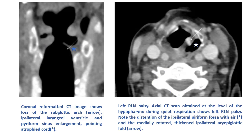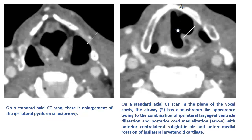Some representative images from our cases: a coronal reformatted CT image shows loss of the subglottic arch, ipsilateral laryngeal ventricle and piriform sinus enlargement and pointing, and an atrophied ipsilateral vocal cord. The image on the right shows a left RLN palsy where there is distension of the ipsilateral piriform fossa and a medially rotated thickened ipsilateral aryepiglottic fold. Another axial CT shows enlargement of the ipsilateral piriform sinus, and on the right there is a mushroom-like appearance of the airway due to a combination of ipsilateral laryngeal ventricle dilatation and posterior cord medialization.